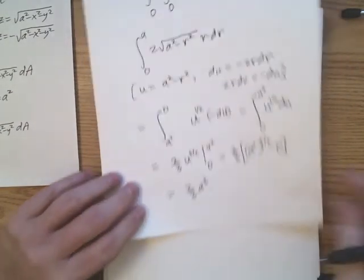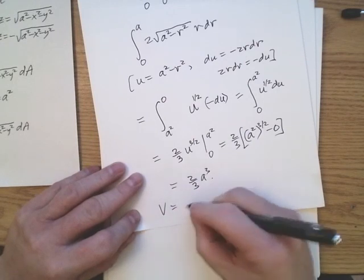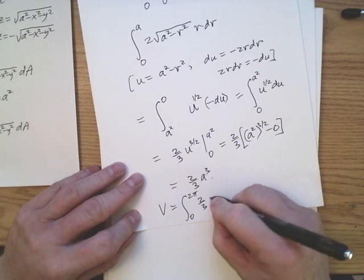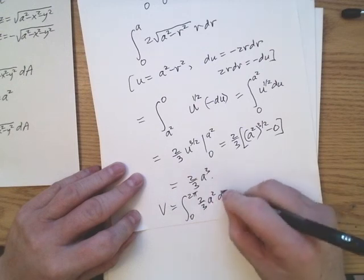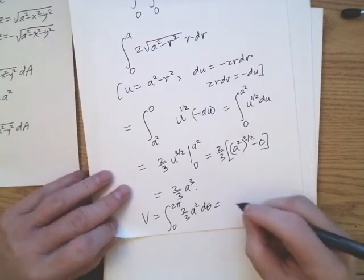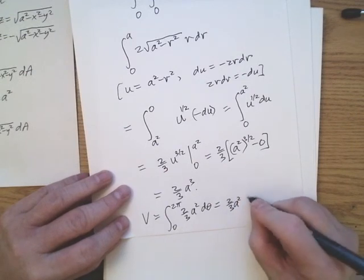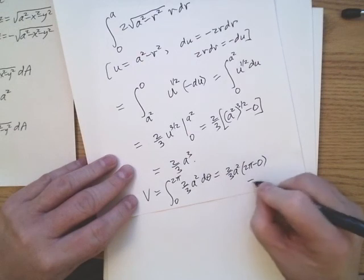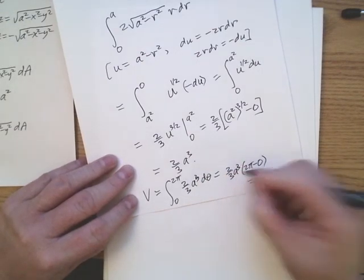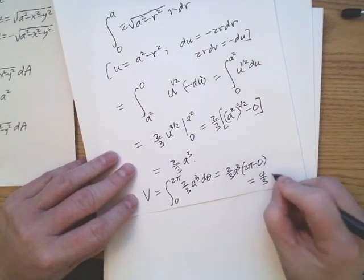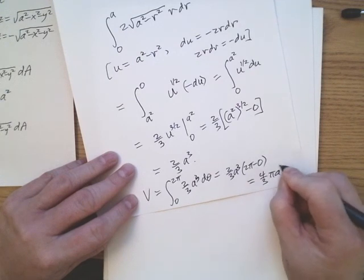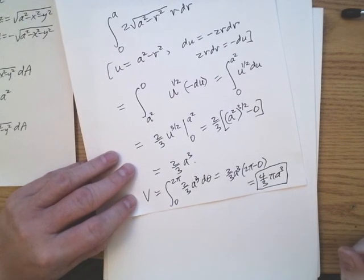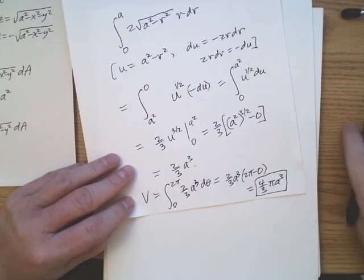Integrating the result over theta from zero to two pi: the integral of two thirds A cubed d theta from zero to two pi gives two thirds A cubed times two pi, which equals four thirds pi A cubed. So the volume of a sphere of radius A is four thirds pi A cubed — confirming the well-known formula.